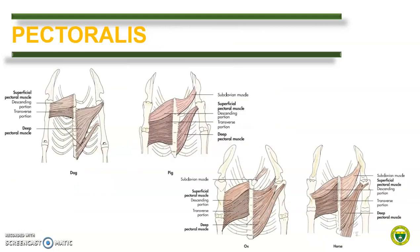As we recall, the pectoral muscle is divided into superficial and deep pectoral muscle. They can also be named based on the orientation of their muscle fiber. The superficial pectoral muscle is further subdivided into a descending pectoral and transverse pectoral. On the other hand, the deep pectoral can also be named as the ascending pectoral muscle. The said pectoral muscles are present in all animals. However, an additional muscle called subclavian muscle is present in all animals except in dogs. It has sometimes been considered as part of the deep pectoral muscle. This muscle is well developed in pigs and horse. It is poorly developed and narrow in ruminants, and absent in dogs.